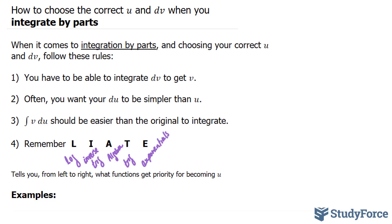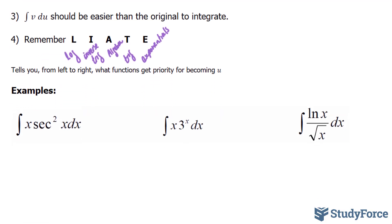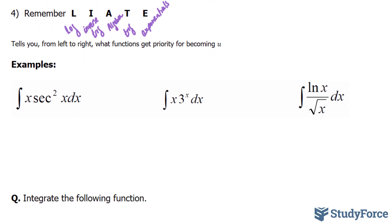So let's do some examples to practice what we just learned. Your task is to identify what your u will be and what your dv will be. Now of these two, given that it's a product, x would get your u value — so u would be assigned to x. The reason why is because secant is a trigonometric function, and since it's less priority than A, which is algebra, your dv will be secant squared.